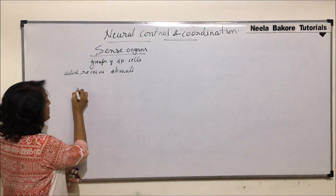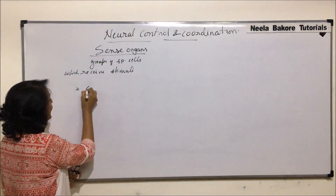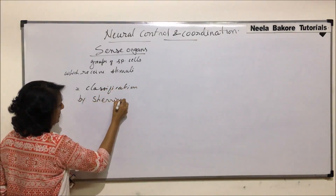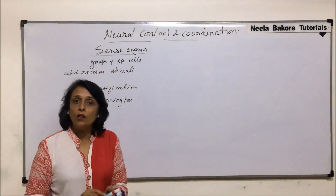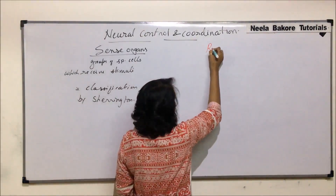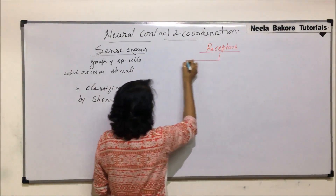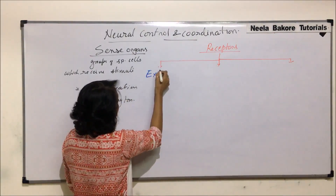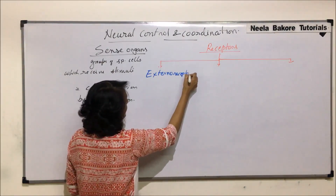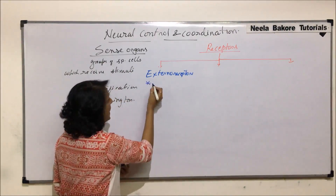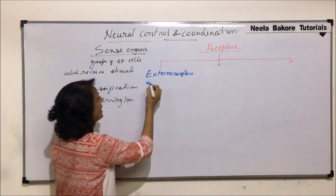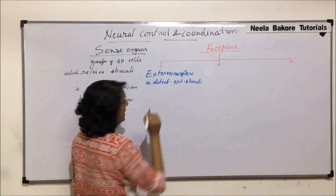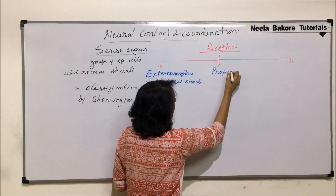This classification was given by Sherrington. According to this classification, all the receptors are divided into three categories. The first are external receptors — as the name tells us, they help us in perception of external stimuli, so they detect external stimuli. The second are called proprioreceptors.